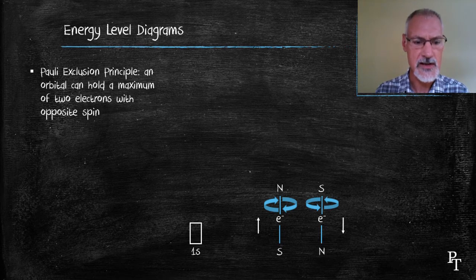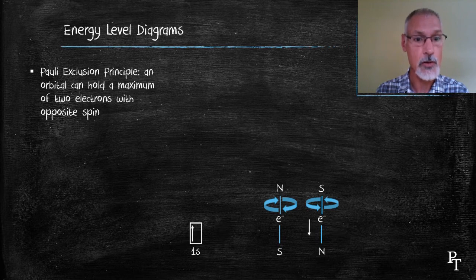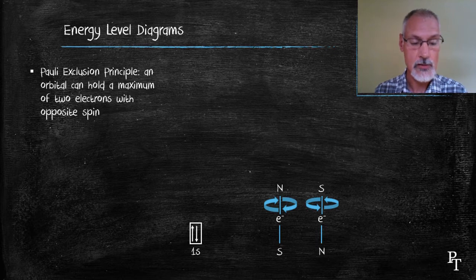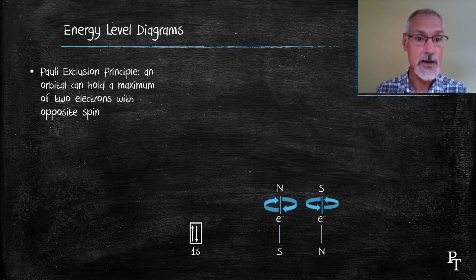Pauli's exclusion principle states that the 1s orbital can hold a maximum of two electrons, and if it holds two, they must possess opposite spin. Here I'm showing the 1s orbital with two electrons in it, each spinning in opposite directions. I use the arrow to represent the electron.